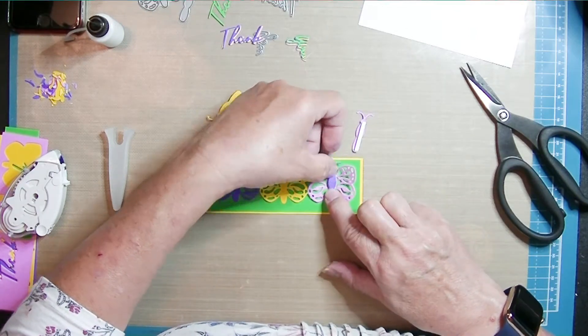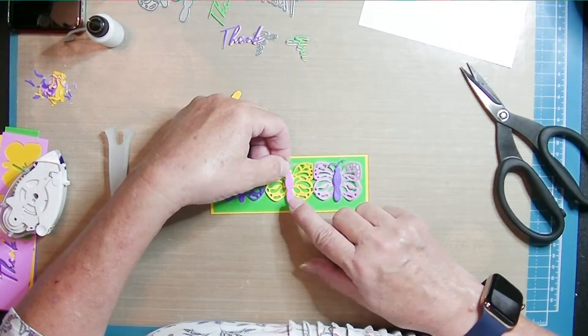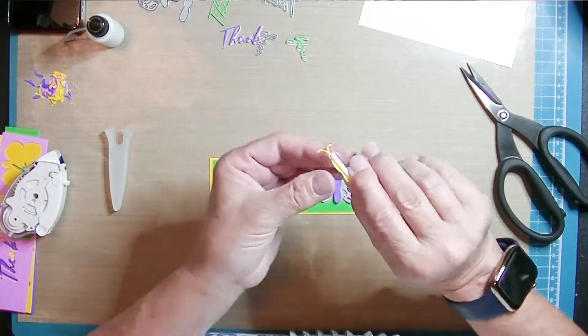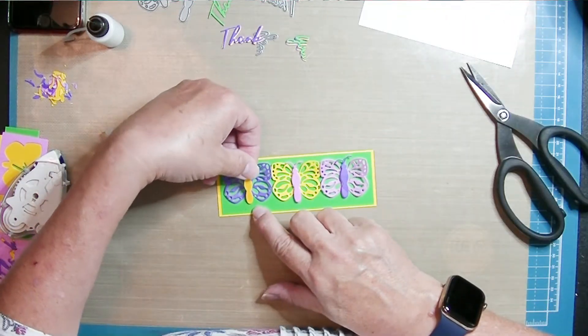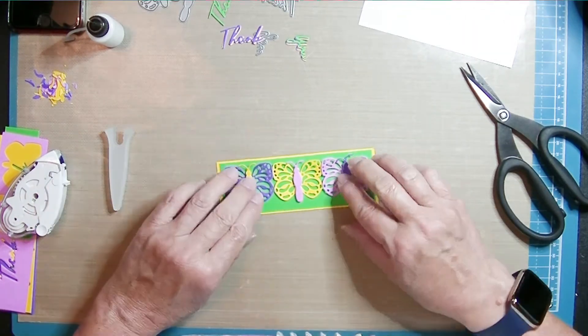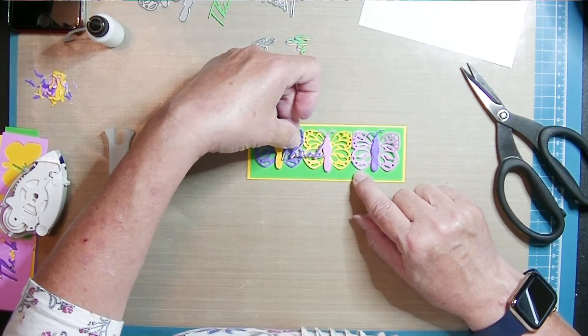And I'm just putting the pink and the purple, and then I'll put the pink on the yellow and the yellow on the purple. I wanted a bright and colorful card. That's all I wanted. And as soon as I saw these bright cards, I thought of this butterfly from this die set.